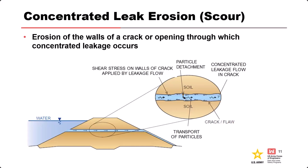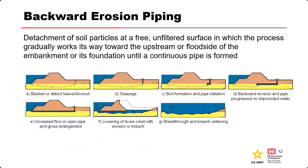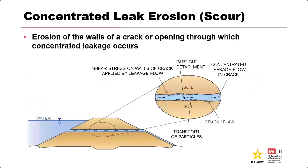Essentially any place where we have an opening through which water can flow from upstream to downstream is a concern. This figure shows a continuous crack through a homogeneous earthfill embankment. Backward erosion piping is probably one of the most important internal erosion mechanisms. Concentrated leak erosion typically requires soil that has some cohesion to it — something that can sustain a crack — some plasticity. Backward erosion piping, by contrast, is usually restricted to more of a sandy, cohesionless material.